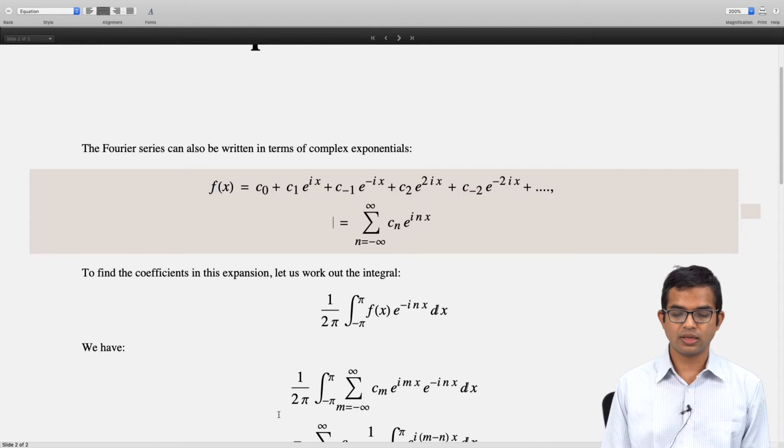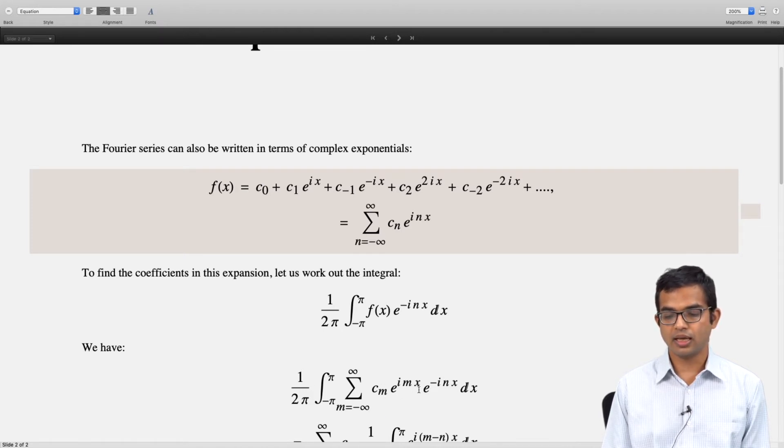We have 1/(2π) times the integral from -π to π of the summation over m (instead of n, a dummy index) of cₘe^(imx), then e^(-inx) dx.